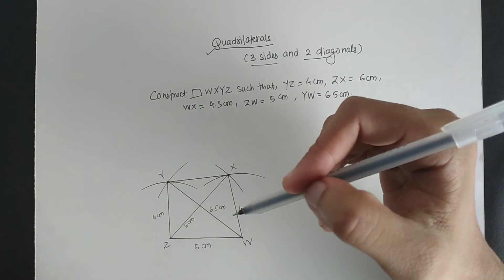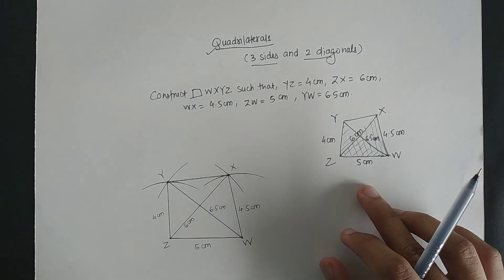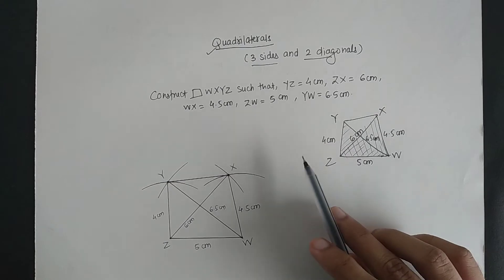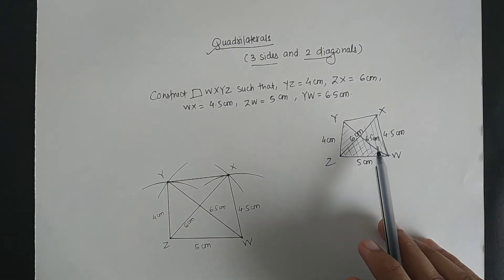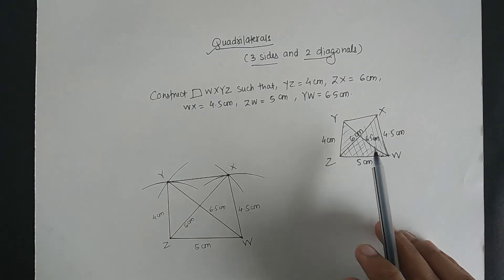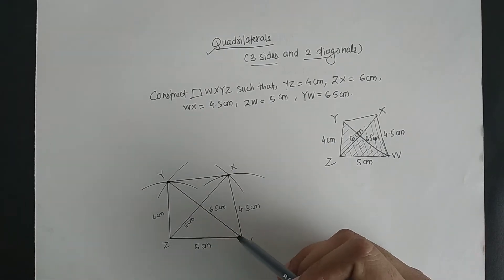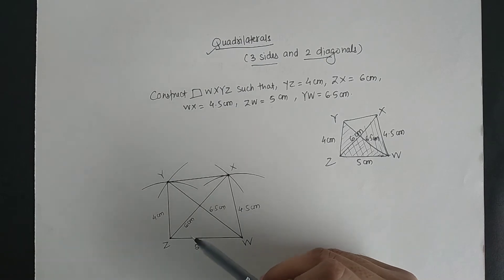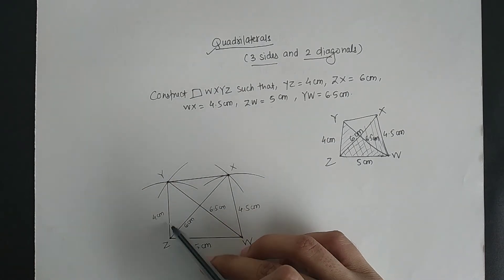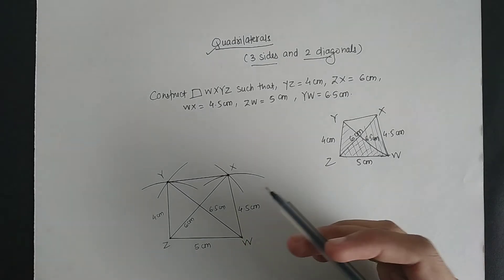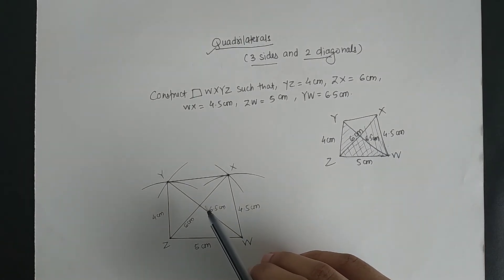So the process is simple. We just have to draw the rough figure of how we construct this quadrilateral. We were having the dimension of three sides and two diagonals, and we drew two triangles. After drawing the two triangles, the distance between Y and X was joined, and by this we have completed the quadrilateral. This construction can be done if we have the length of two adjacent sides and we will also have the measurement of the angles of the quadrilateral.